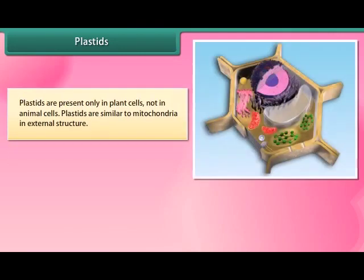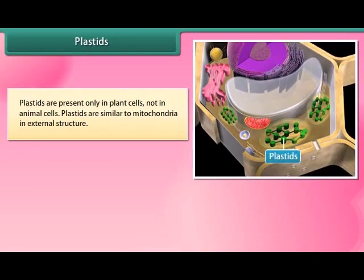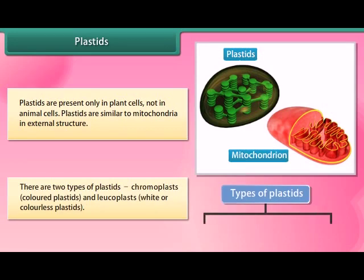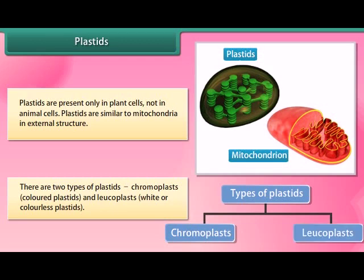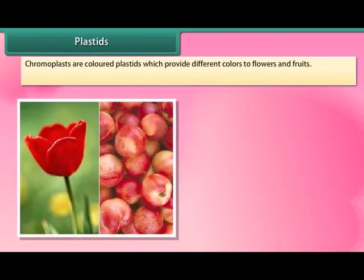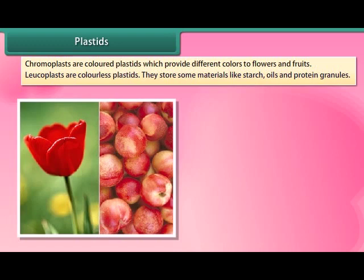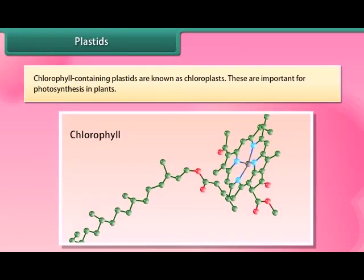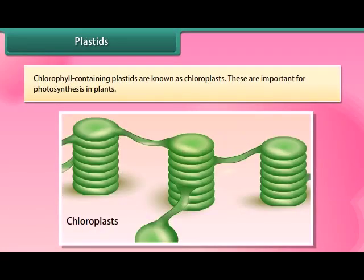Plastids are present only in plant cells, not in animal cells. Plastids are similar to mitochondria in external structure. There are two types of plastids: chromoplasts, which are colored plastids, and leukoplasts, which are white or colorless plastids. Chromoplasts provide different colors to flowers and fruits. Leukoplasts are colorless and store materials like starch, oils, and protein granules. Chlorophyll-containing plastids are known as chloroplasts, which are important for photosynthesis in plants.